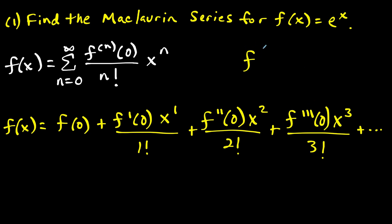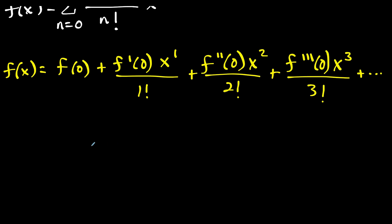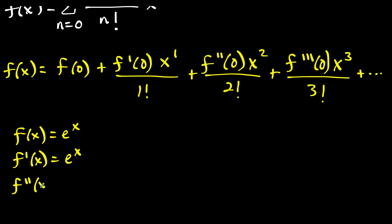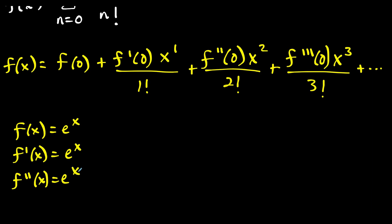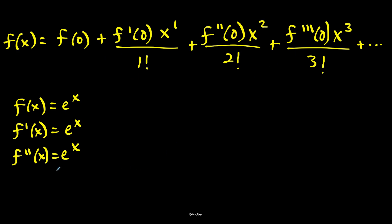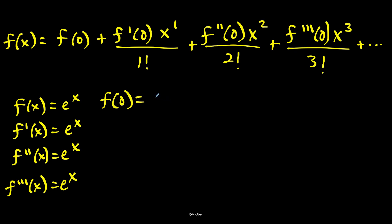Just know that by the fourth derivative you should start writing numbers, because four prime symbols looks a bit sloppy — it's usually after the third derivative that we write numbers. Now, because it's a McLaurin series — a McLaurin series is a power series centered at zero — that tells us we're going to plug in x equals zero. So we have e to the zero power, which is equal to one.